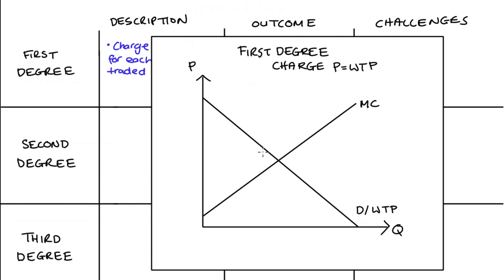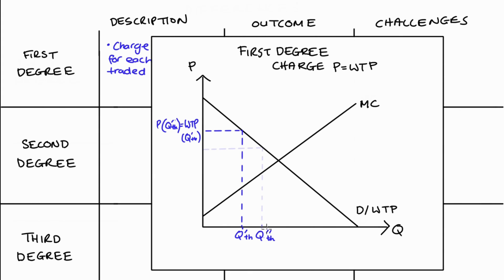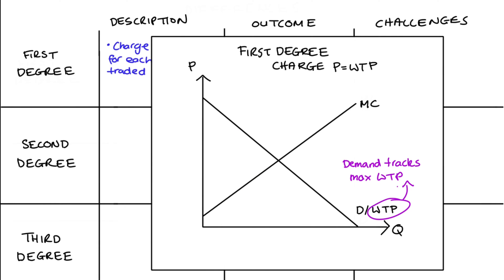To demonstrate this, imagine a firm faces a demand and marginal cost curve. If we consider a unit Q', the highest willingness to pay for that unit is given by the height of the demand curve, and so that will be equal to the price for that unit if the firm charges price equal to willingness to pay. Likewise for another unit Q'', the highest willingness to pay is higher up, so that will be the price charged. Since the demand curve tracks the highest willingness to pay for each unit, as we increase quantity the price of each marginal unit continuously decreases and follows the demand curve, like the red line shown.